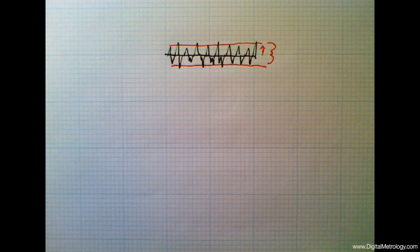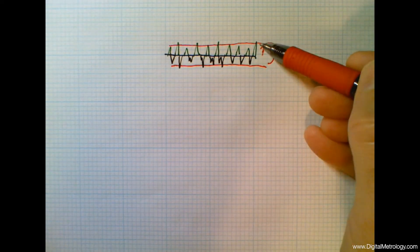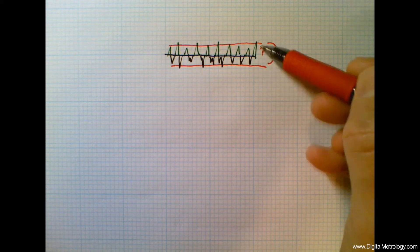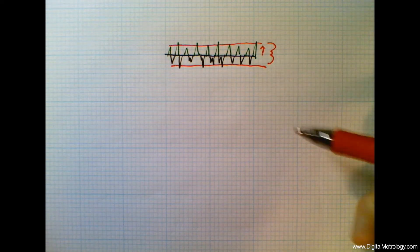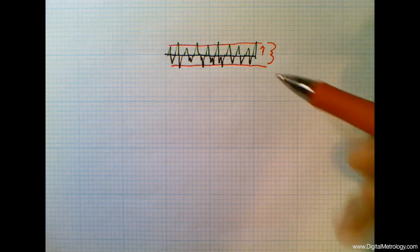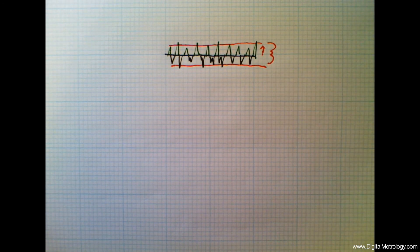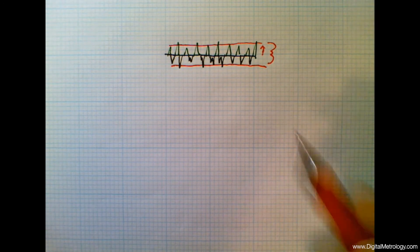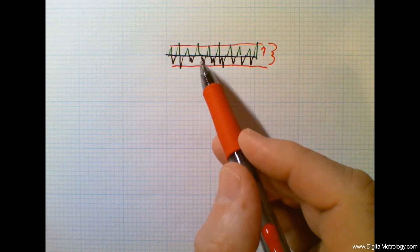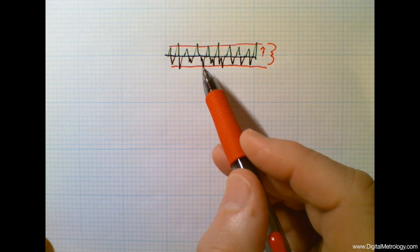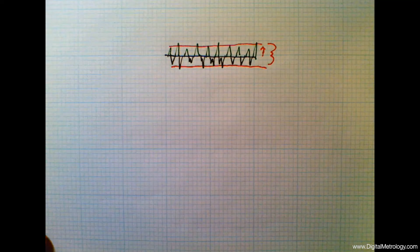This window or this region or this zone of where the roughness is contained is interesting. It's interesting to our eye. We say the surface is basically this rough. It's also interesting in terms of surface function. What kind of zone is taken up by the surface texture? How much of a clearance is taken up by surface texture?